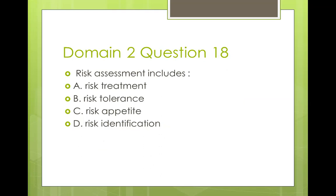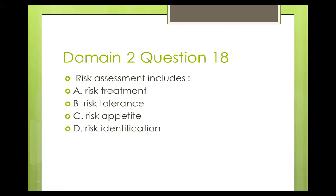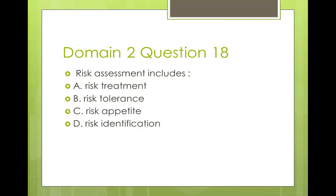Question eighteen: risk assessment includes A) risk treatment, B) risk tolerance, C) risk appetite, D) risk identification. Risk assessment consists of three things: risk identification, risk analysis, and risk evaluation. Out of all four options, the only answer is D — risk identification. Risk treatment is the method chosen to handle risk: avoidance, acceptance, mitigation, or transfer. Risk tolerance is the risk you are able to accept above your residual risk level, and risk appetite is the risk you are willing to accept as an organization.